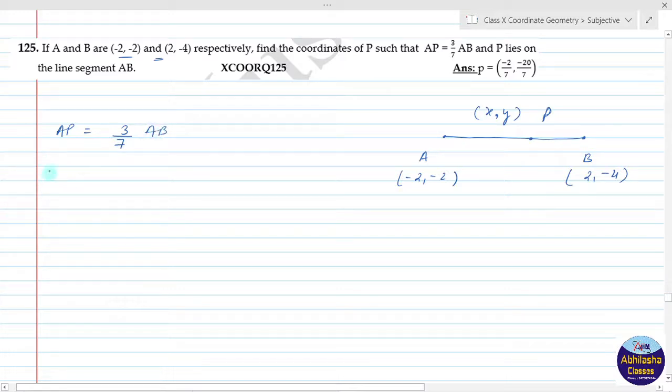Now we have to say that AP is equal to 3/7 of AB. AB can be written as AB = AP + PB. This is the whole AB; we can write it in two parts: AP plus PB.